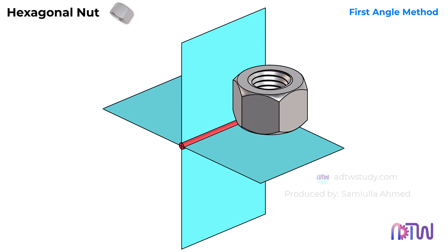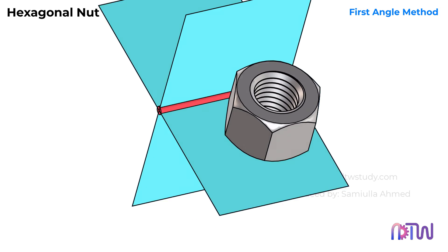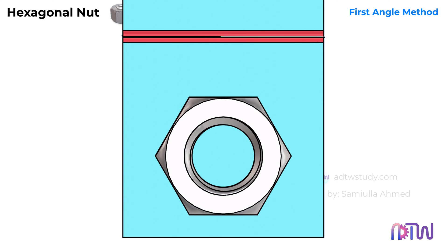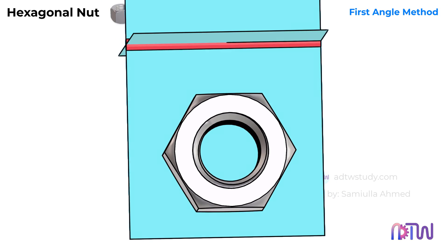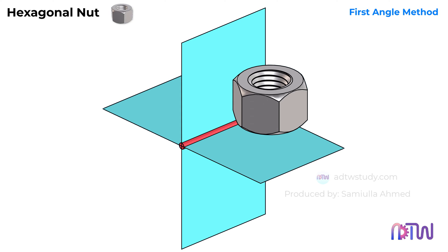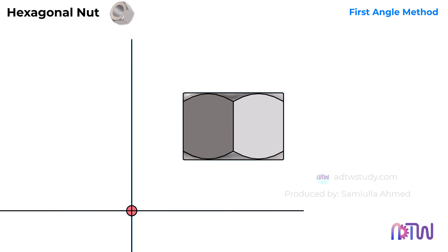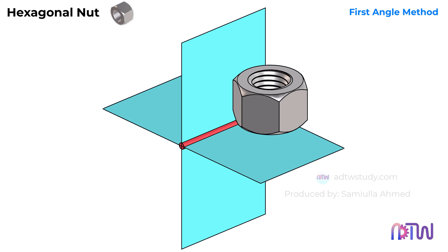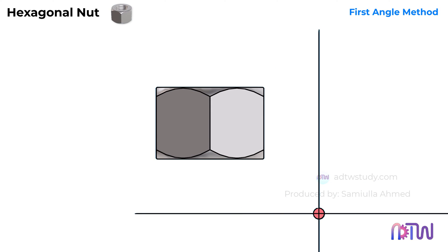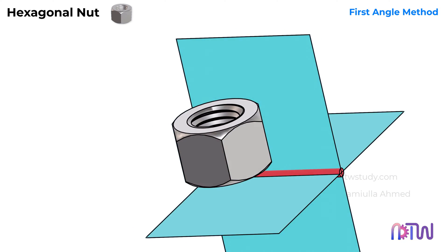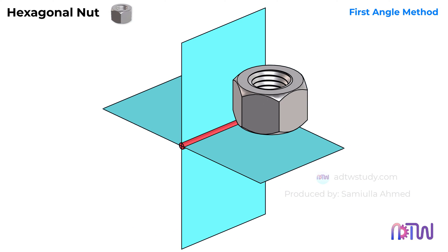When we view it from the top, the nut will look like this. From the left side view, the nut will look like this. And from the right side view, it will look like this. I hope this clarifies how the different views of a hexagonal nut look from different perspectives.